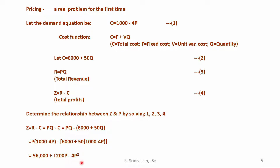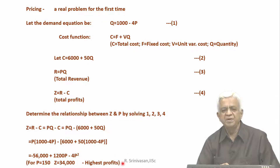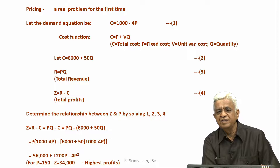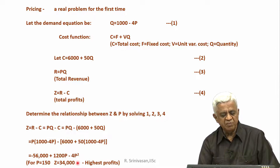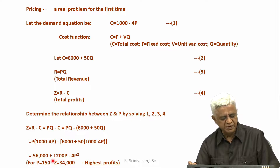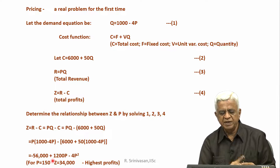If you see, this equation becomes Z = -56000 + 1200P - 4P². You solve this equation — the second differential is likely to give you what price should be charged. So if you solve this equation, you will get that for P = 150, your profits will be at 34000, which is the highest. This was illustrated when I looked at differential calculus in the previous classes, and the same equation I am using for pricing the product.